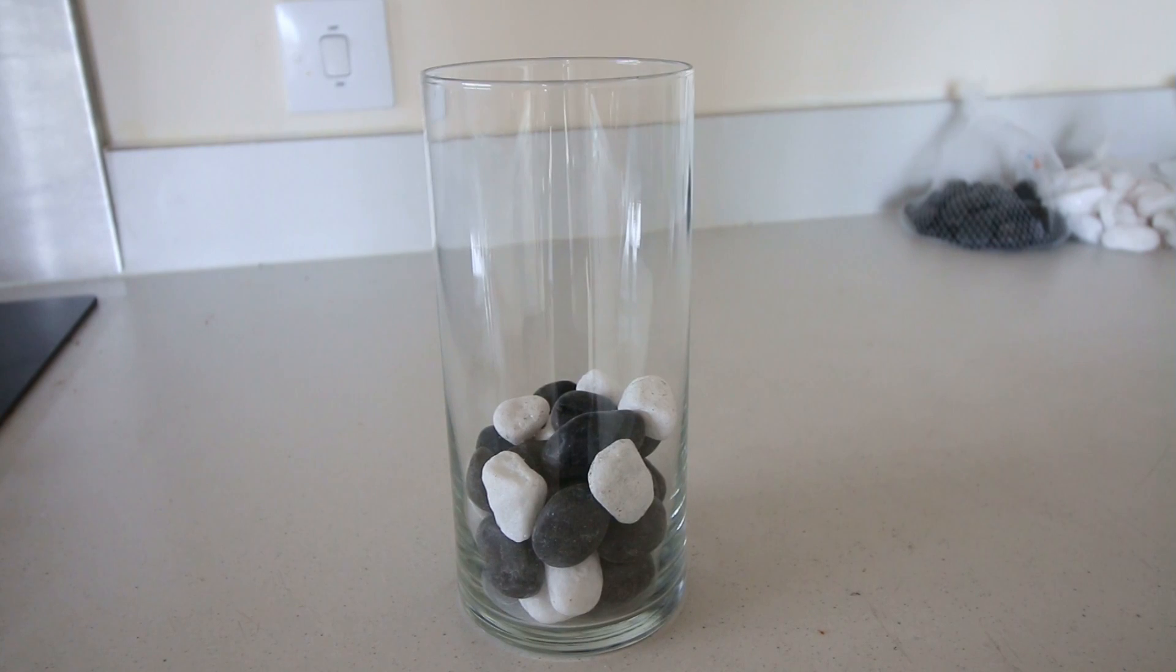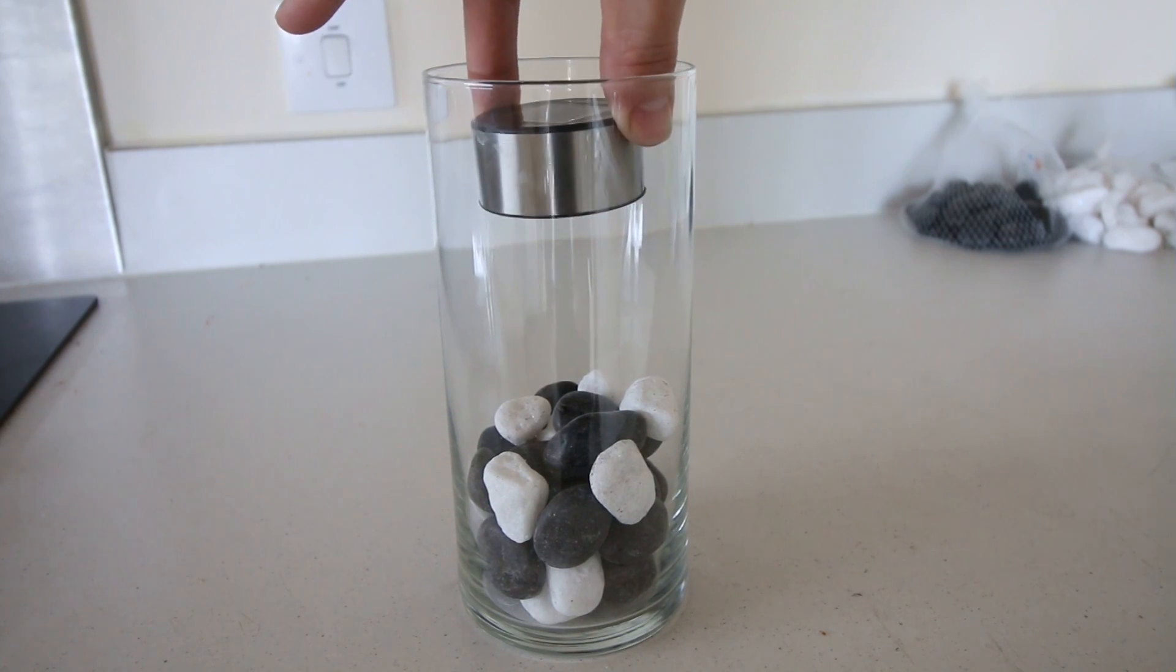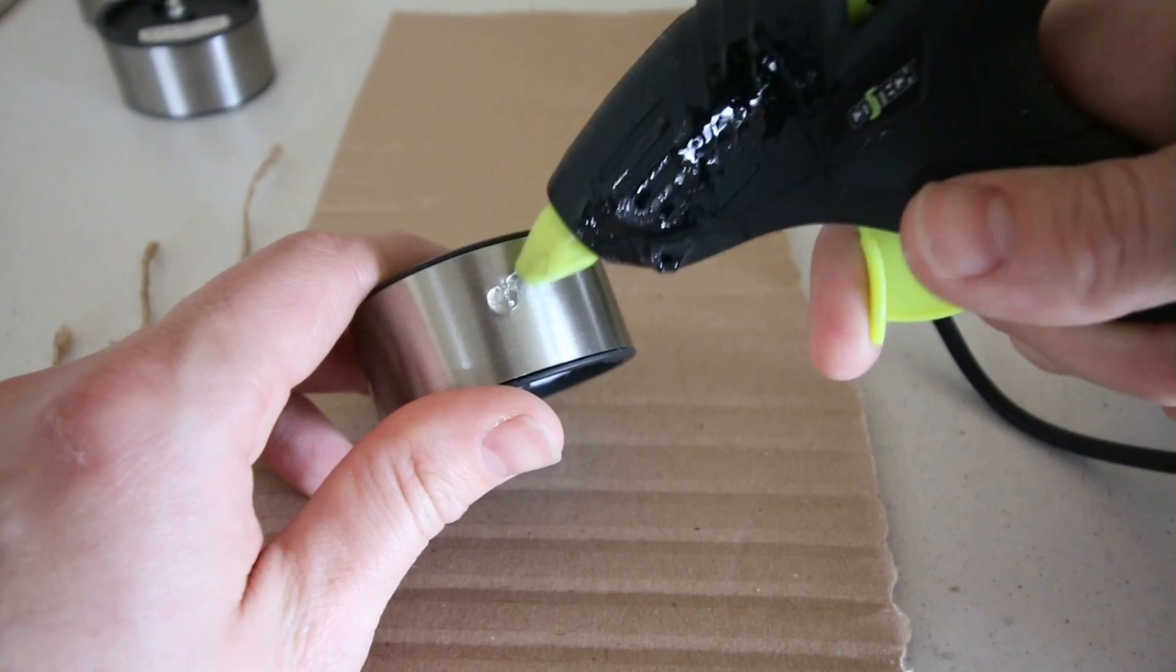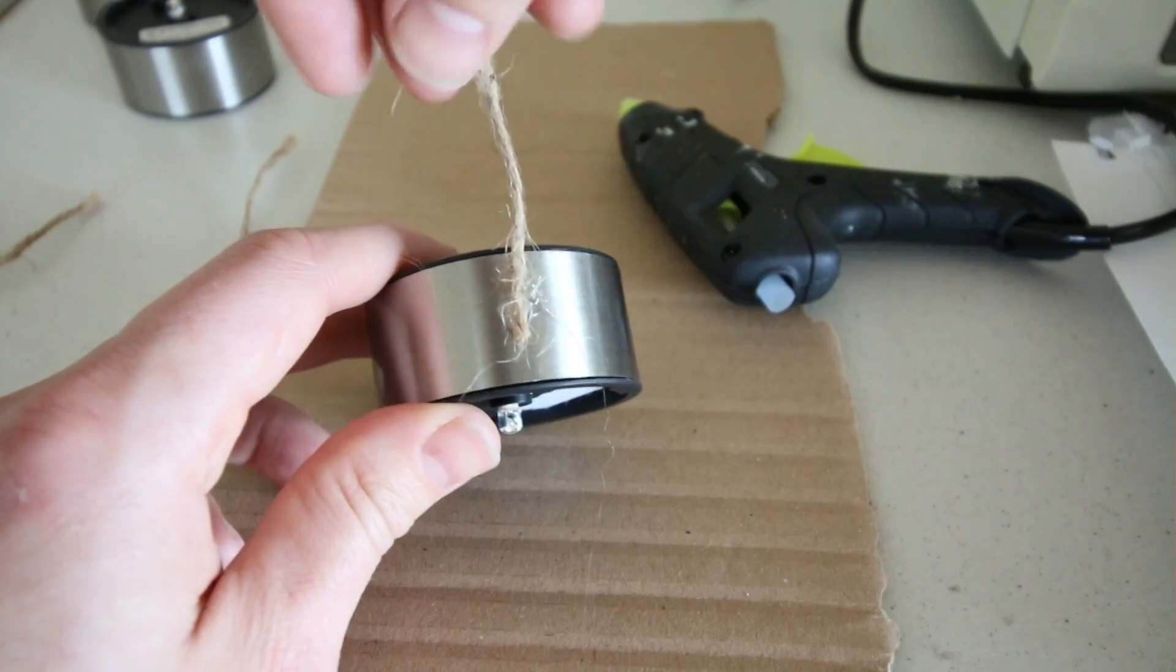I'll basically be using the rope to secure this above the rocks like so. I then used four pieces of the string, each being about five inches long. I then used hot glue to secure them at opposite sides of the panel as shown.